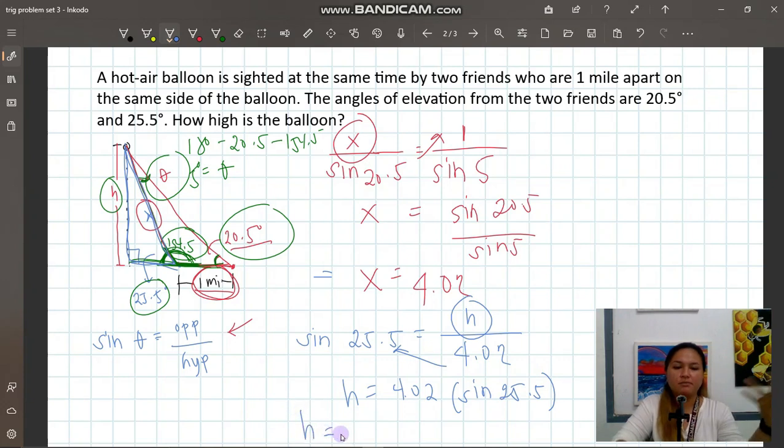Our answer here - now we can get the height. That's 4.02 times sine 25.5. We'll get 1.73 approximately. The unit is mile - 1.73 miles is the height of our balloon.